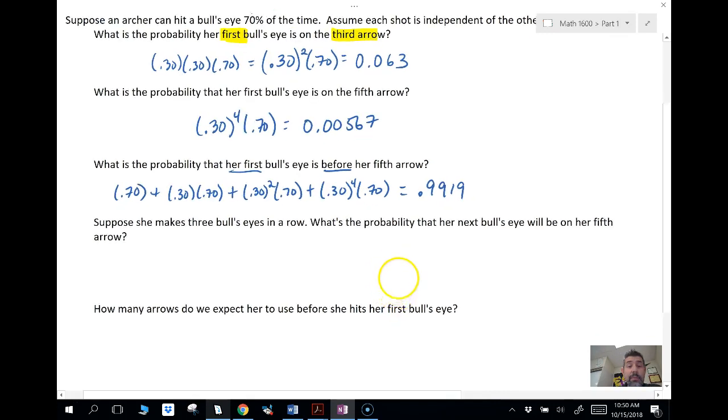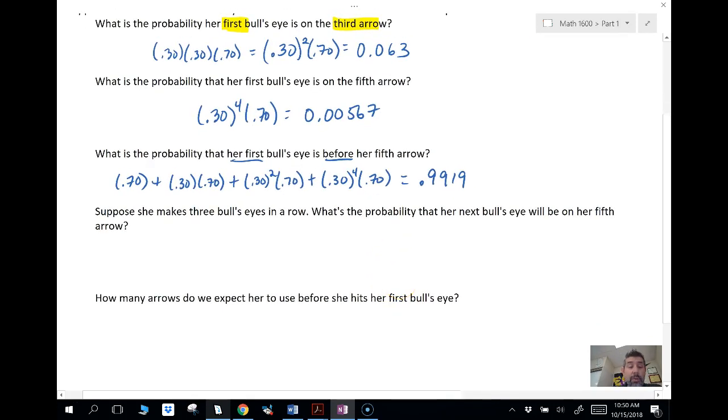Okay, so that's a little bit different. All right, suppose she makes three bullseyes in a row. What's the probability that her next bullseye will be on her fifth arrow? So let's think about this. She's already made three, so she's not going to make the fourth and she's going to make the fifth. Now here's a tricky one. This one was similar to one that came up on an AP Statistics exam a few years back.